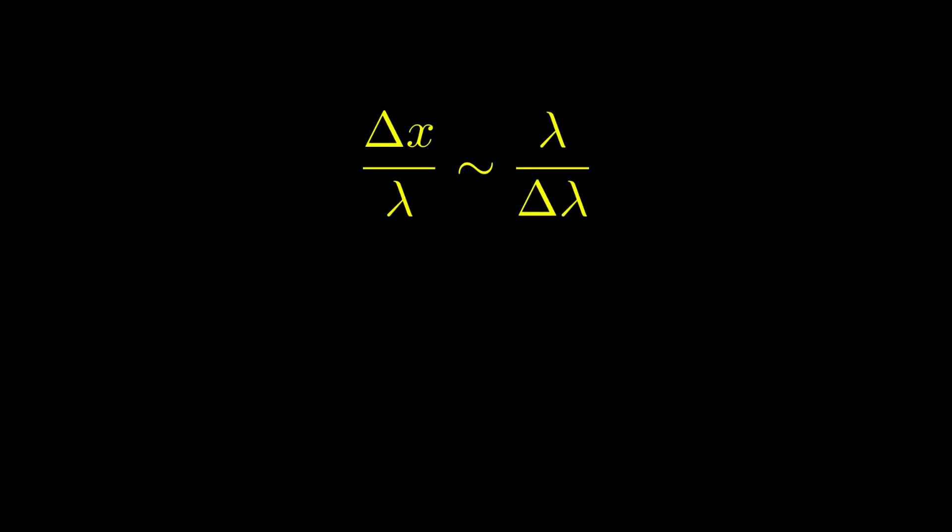Now, let's do the opposite. The wavelength is much smaller than the space where the particle resides. We get this. This means that delta lambda is much smaller than lambda. In other words, the wavelength is pretty well certain. It also reflects the fact that the momentum is also highly certain.